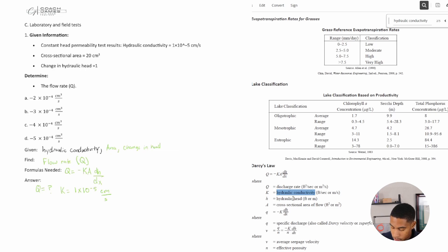A equals the cross-sectional area, which is 20 centimeters squared. And dH over dX equals the hydraulic head or change in hydraulic head, which equals 1.